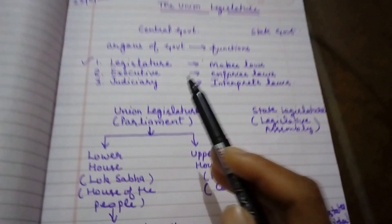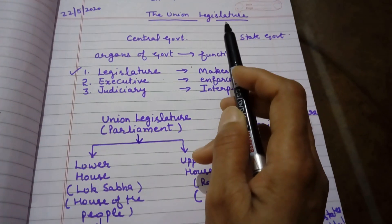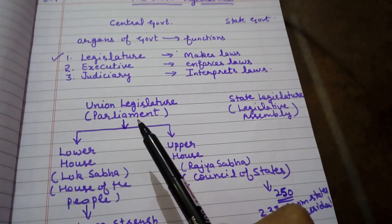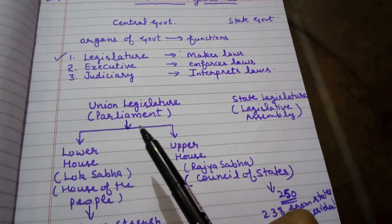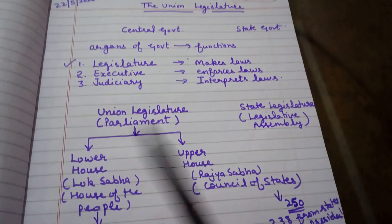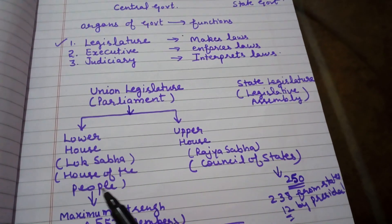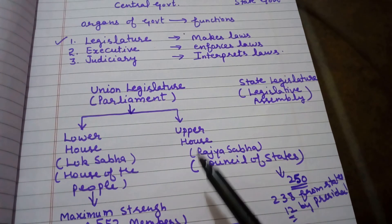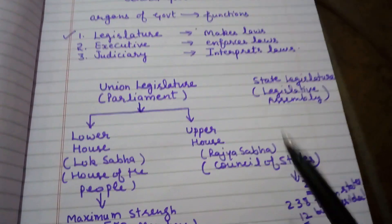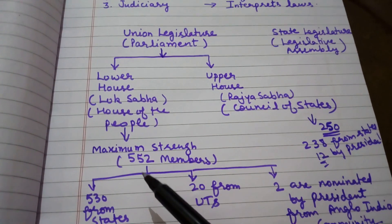Our topic is Union Legislature, which is the center legislature known as Parliament. It has two houses: the lower house and the upper house. The lower house is known as Lok Sabha, also called the House of the People. The upper house is known as Rajya Sabha, also called the Council of States. The maximum strength of Lok Sabha is 552 members.